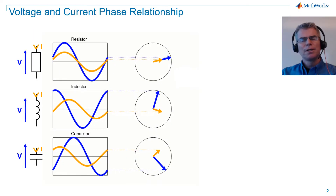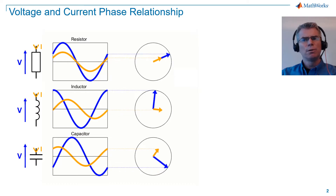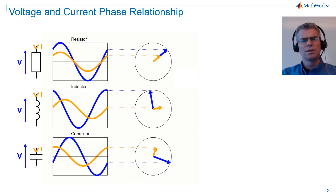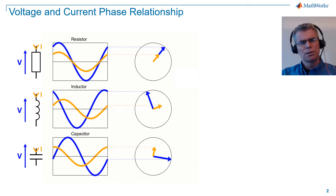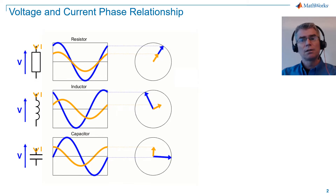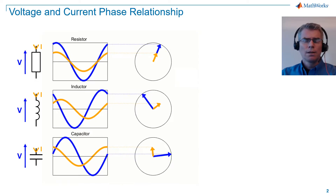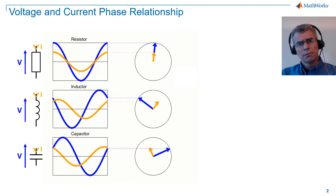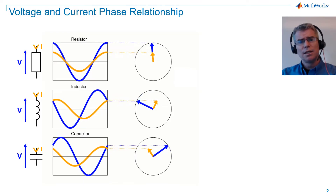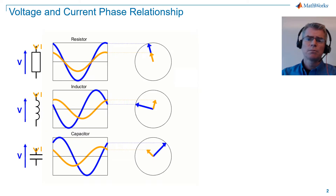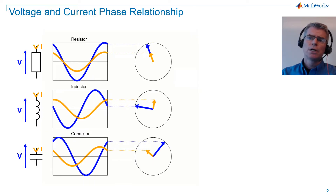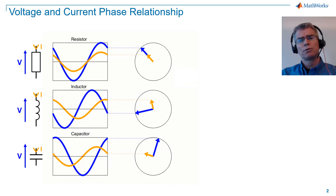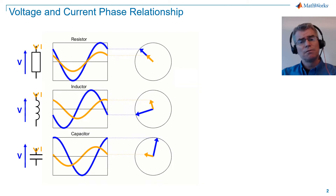Let's begin by looking at the relationship between AC voltage and current in the three fundamental passive components in electrical systems: resistors, inductors and capacitors. What we see here are two views of voltage and current. On the left we see the instantaneous waveforms as time progresses. On the right we see a vector representation of the waveforms, with the vectors rotating at system frequency.